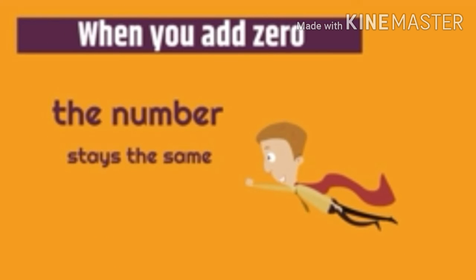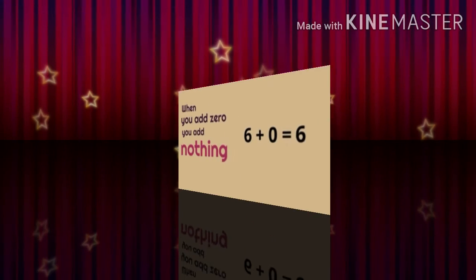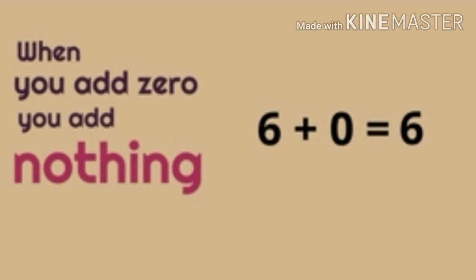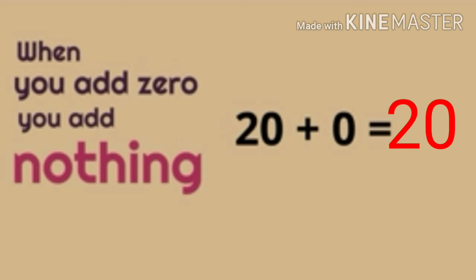Look. When you add zero, the number stays the same. When you add zero, you add nothing. Yes, you add nothing. That is why six plus zero is equal to six. Twenty plus zero is equal to twenty.